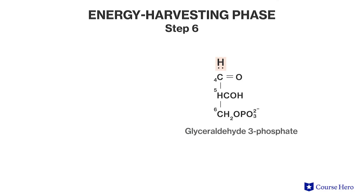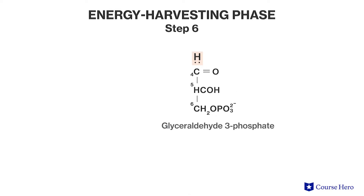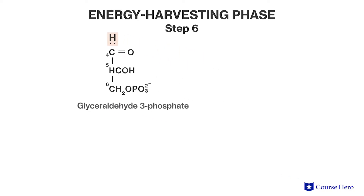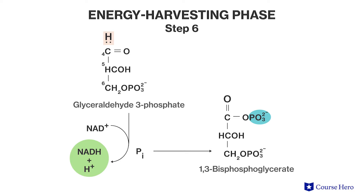Step six: glyceraldehyde 3-phosphate dehydrogenase catalyzes a two-step reaction. The first reaction oxidizes G3P with the coenzyme NAD+ to make NADH. Energy is produced from this reaction to power the second reaction, where a phosphate group is added to form 1,3-bisphosphoglycerate.